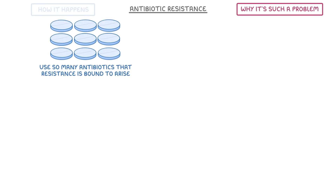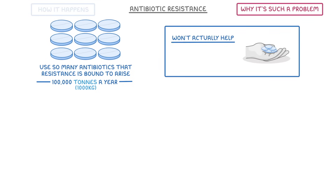The problem though is that we use so many antibiotics that resistance is just bound to arise. In fact, it's estimated that we use around 100,000 tons of antibiotics each year. And because each tonne is 1,000 kilos, that's a lot of antibiotics. One of the reasons that we use so many is that doctors often give out antibiotics in cases where they won't actually help, such as when somebody has a viral illness which antibiotics can't kill, or in non-serious cases such as tummy bugs that will generally clear by themselves in a few days anyway.